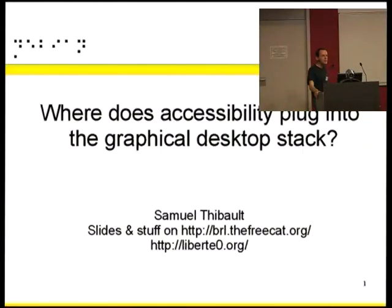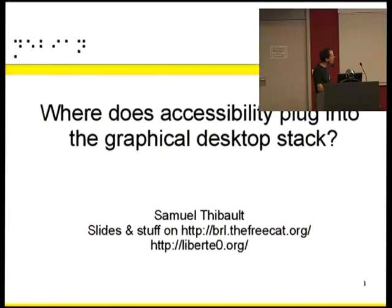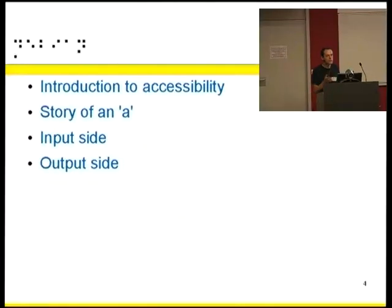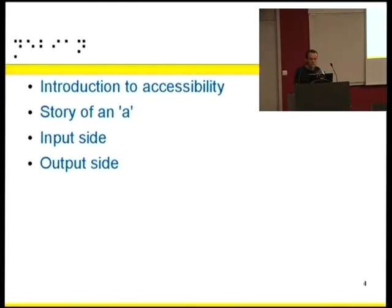We'll talk about accessibility on the very technical side so you can understand how it plugs into the graphical desktop stack. The slides are on braille.freecat.org if you want to refer back. I will first introduce the basic needs and principles of accessibility, then talk about what happens when you press A on a keyboard, and then discuss accessibility on the input side and the output side — particularly concerning Xorg.